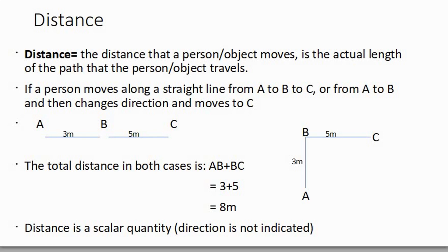If a person moves along a straight line from A to B to C — or from A to B and then changes direction and moves to C — the total distance in both cases is AB plus BC. So 3 plus 5 is 8 meters.